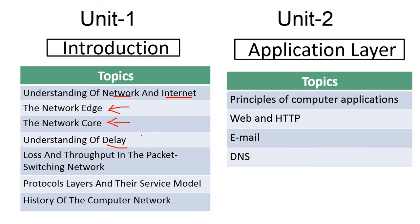Then we discussed loss and throughput in packet-switched networks. Before that we discussed types of switching: circuit switching, message switching, and packet switching. In terms of packet switching, we discussed virtual datagram packet-switched networks as well as circuit earlier establishment packet-switched networks.